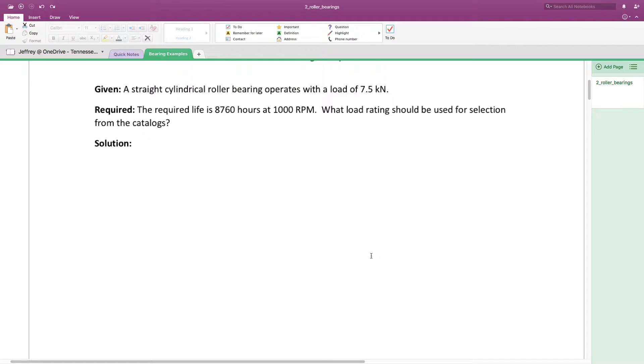Starting with a straightforward problem, we're given a known operating load and asked to determine the catalog specification we should choose. That load rating we're looking for is a C10 value. C10 is a dynamic load rating in the catalogs; that's what we're looking for in a problem like this.